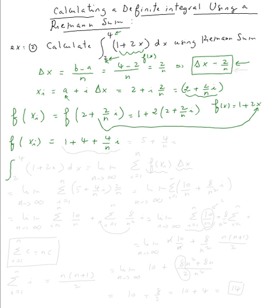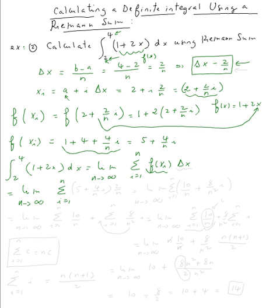Now let's use the limit definition. The integral from two to four of one plus two x dx equals the limit as n goes to infinity of the sum from i equals one to n of f of x sub i times delta x. Substituting, f of x sub i is five plus four over n times i, and delta x is two over n.